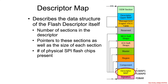Next is the descriptor map, which basically provides the pointers to each of the subsequent sections — so it tells you where the component is, the region, the master, and so forth. It also contains some information about how many SPI flash chips are used in this particular setup.